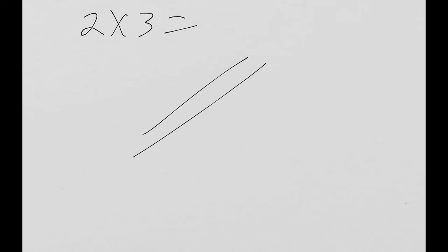Take the second number, 3, draw 3 lines. And then simply count the number of spots where they cross each other. In this case, that number is 6.